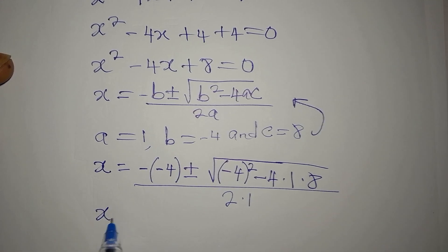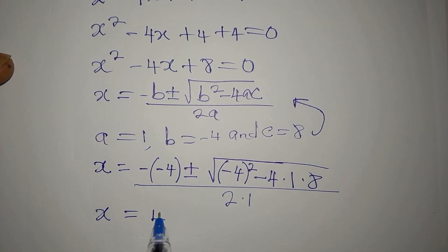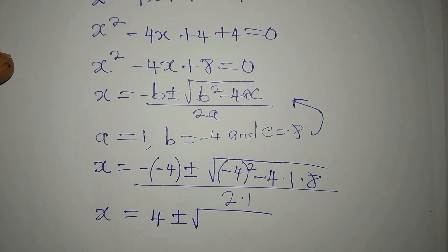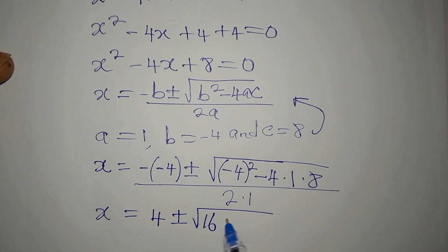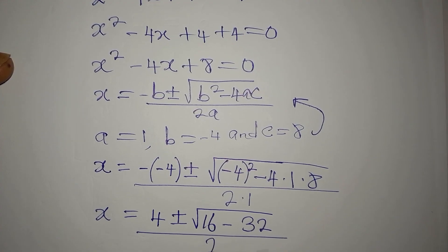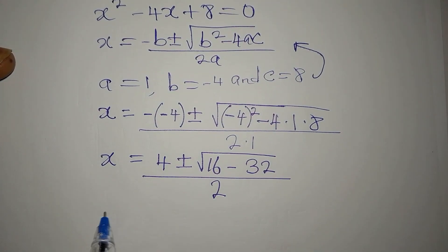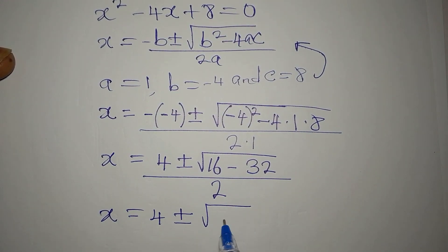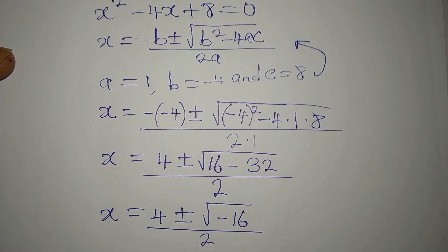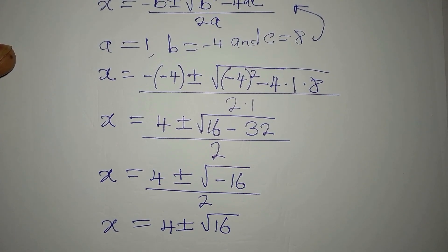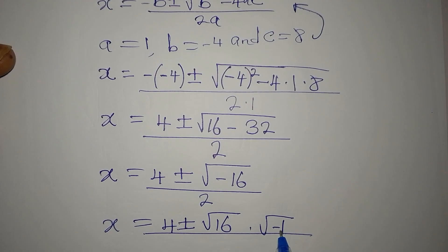So x equals 4 plus or minus the square root of: minus 4 times minus 4 is 16, then minus 32 (since 4 times 1 times 8 is 32), divided by 2. That gives 4 plus or minus the square root of 16 minus 32, which is the square root of negative 16. Factoring out negative 1, that's the square root of 16 times the square root of negative 1, all over 2.